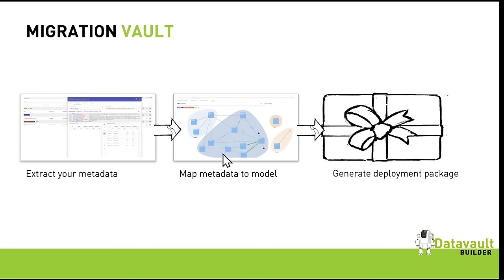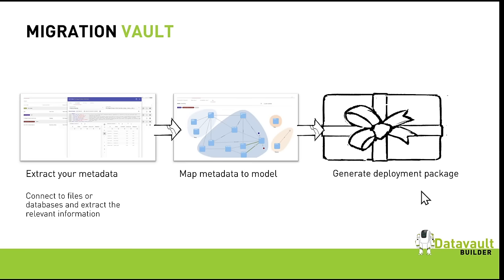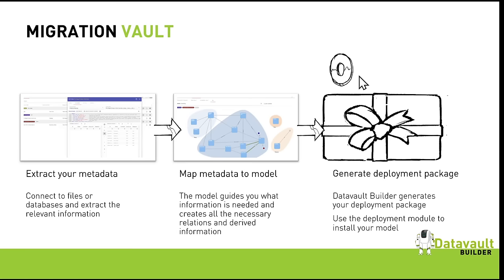We need the intermediate model because, for example, if we generate an ID for a hub, we want to reuse it in the satellite and reference it in the link. This allows us, through the APIs created in Data Vault Builder, to automatically access that information. The target is to generate a deployment package — not to directly install the metadata into an environment — because migrations like this typically don't work perfectly on the first try. So you can create version zero, version one, two, three, and deploy just the changes to your test environment to see the impact of your source mapping.